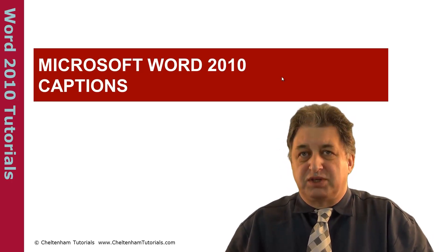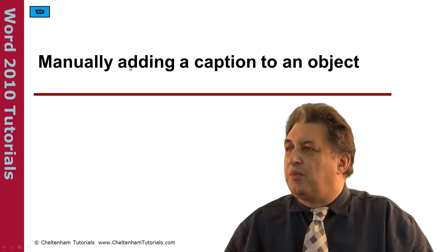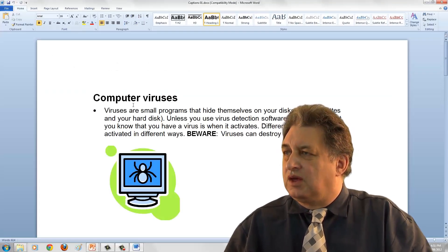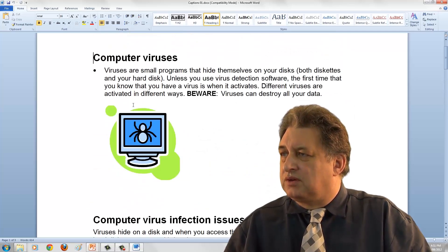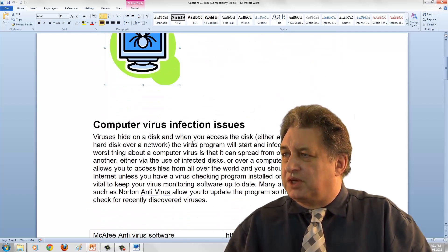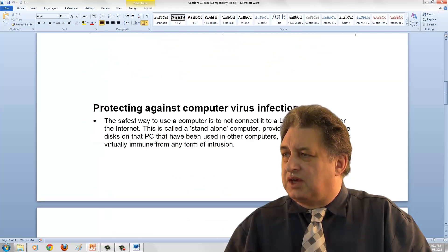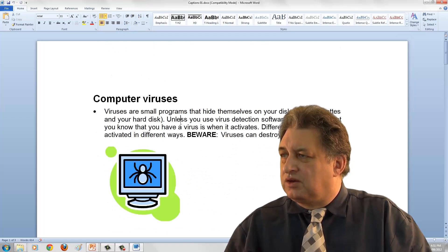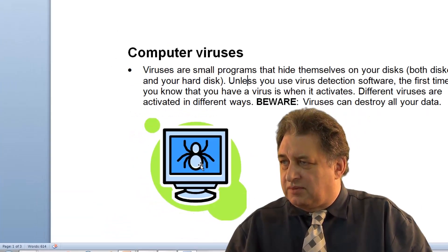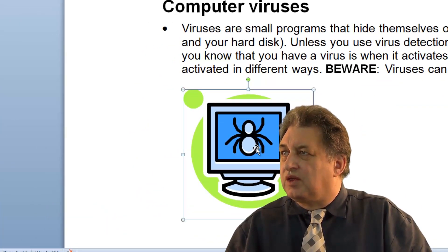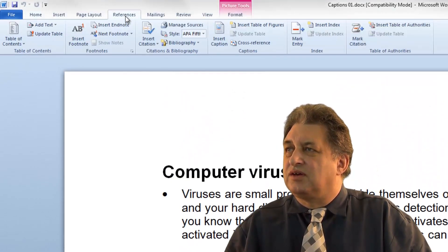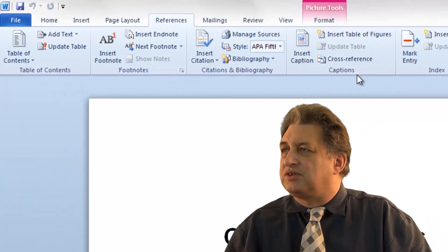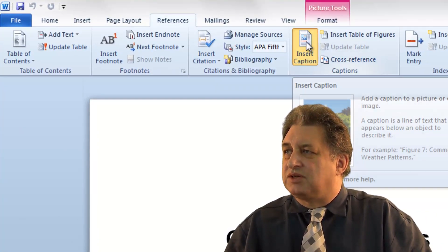Microsoft Word 2.10 Captions — mainly adding a caption to an object. Here we have a typical Word 2.10 document. It's got a picture in it, a table, and another picture down here. So first of all, we'll select this picture here, then click on the References tab, and then within the Captions section, click on where it says Insert Caption.